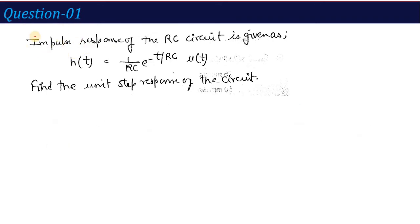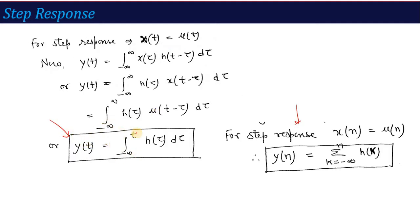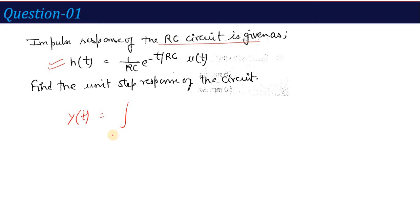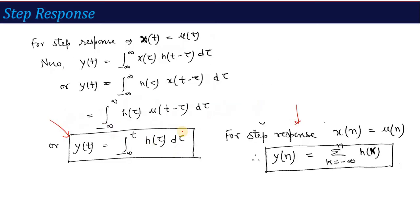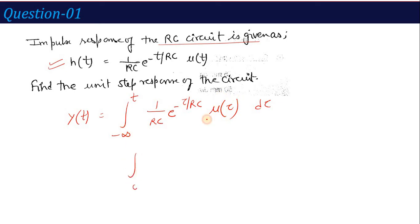Let's start with a question. Given: the impulse response of an RC circuit is h(t) = (1/RC) e^{-t/RC} u(t). Find the unit step response of the circuit. Using the formula y(t) = ∫_{-∞}^{t} h(τ) dτ, we substitute h(τ) = (1/RC) e^{-τ/RC} u(τ). Since u(τ) exists only for τ > 0, the limit changes from 0 to t, giving y(t) = ∫_0^t (1/RC) e^{-τ/RC} dτ.